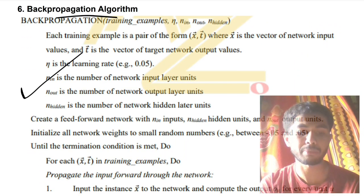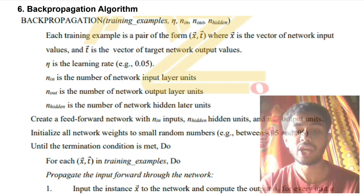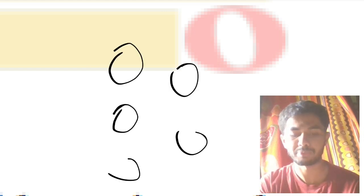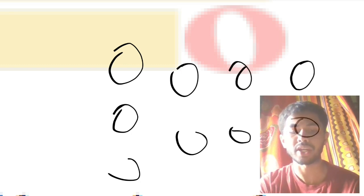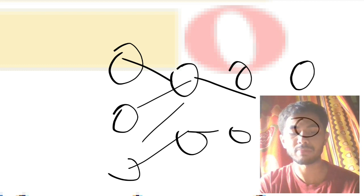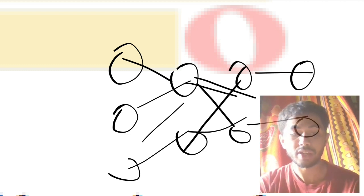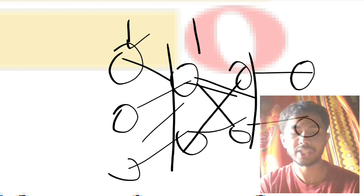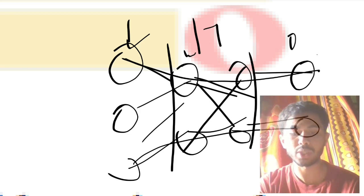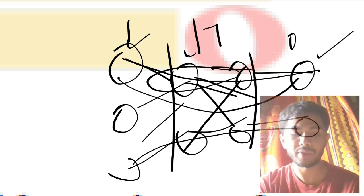For backpropagation, don't just write the algorithm — first write what backpropagation is, and make the diagram. You draw a network with an input layer, some hidden layers in between, and a final output layer. Connections with weights exist between layers. You calculate values forward through the network and get an output. If the output is not correct or not close enough, you come back and update the weights — that is called backpropagation.